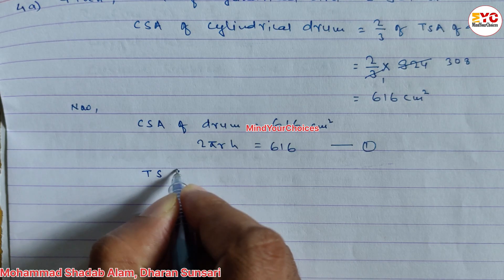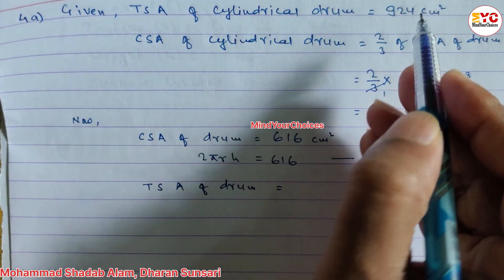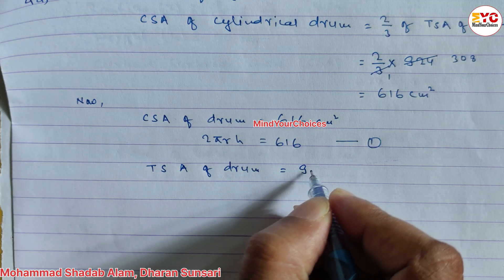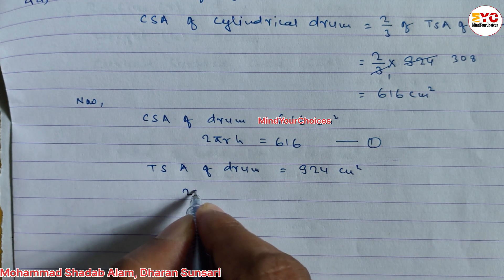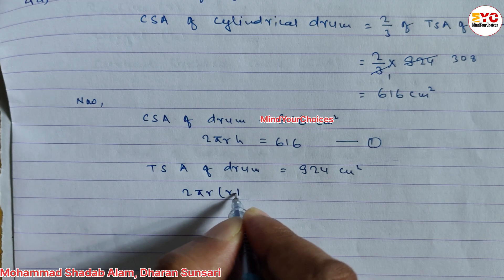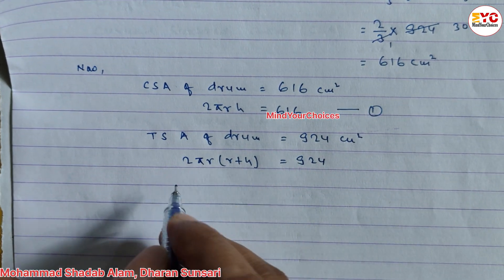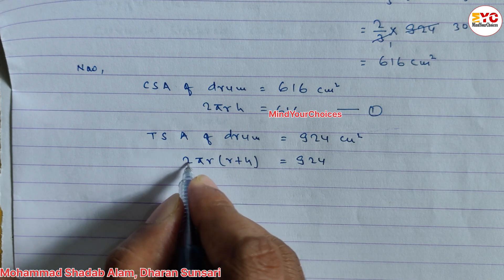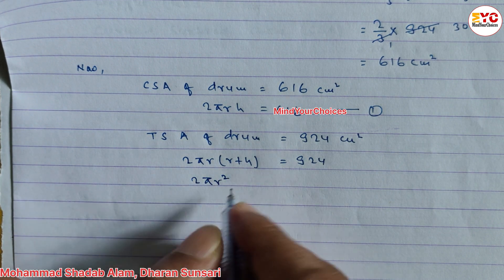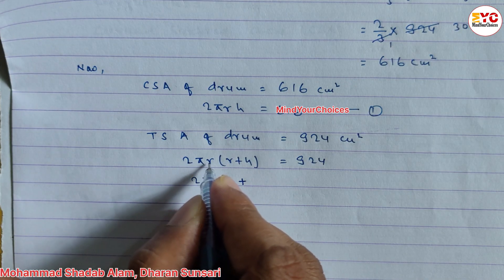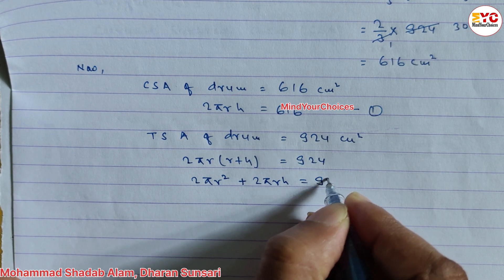Now for the TSA of the drum: TSA equals 924 cm². The TSA formula is 2πr(r + h) = 924. Expanding the bracket: 2πr² + 2πrh = 924.